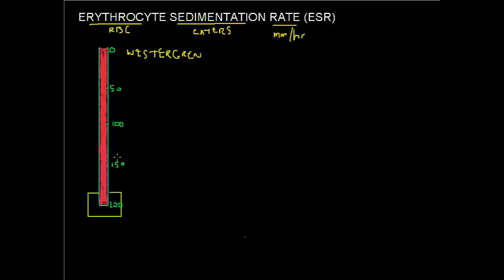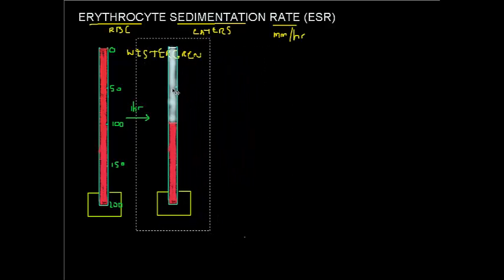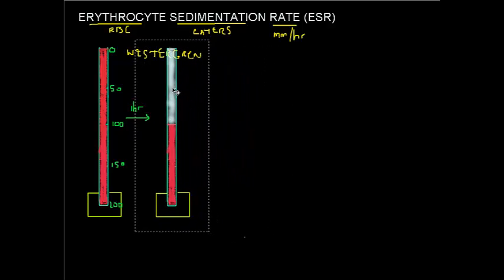What you do is fill up one of these Westergren tubes with blood and allow it to stand vertically for a period of one hour. Over that one hour, the blood cells will settle out and you will get a layered result.